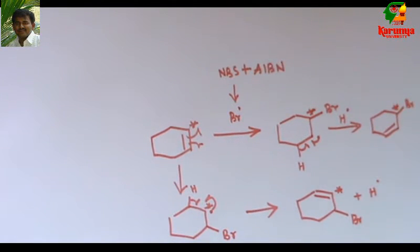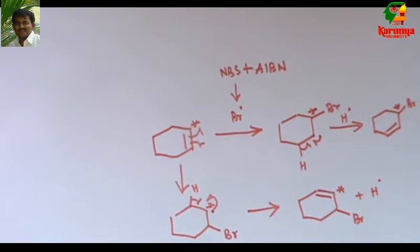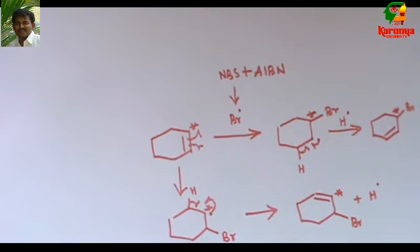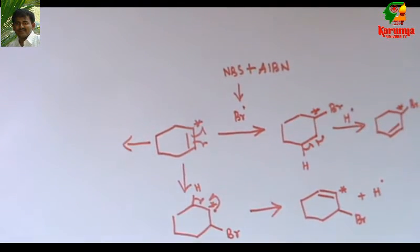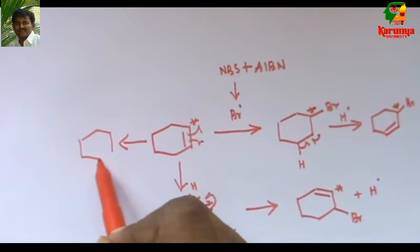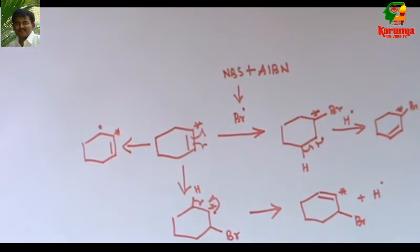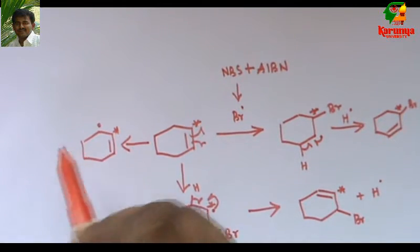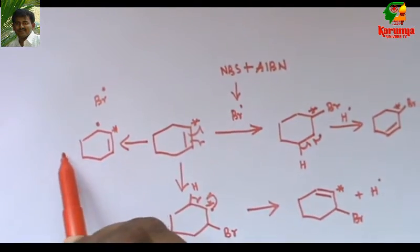So they are not the same. You can see here. Here bromine is on the labeled carbon, but here it is next to that. One more pathway - the allylic radical is generated from this and it combines with Br radical to give the product.